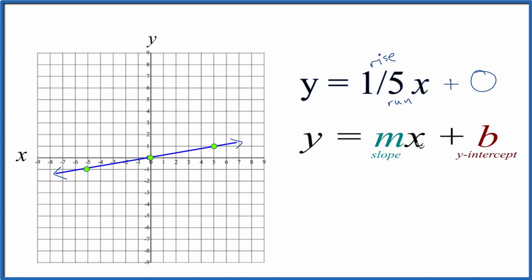And again, you could use a table of values. Here we use the slope-intercept formula. This is Dr. B graphing y equals one-fifth x. And thanks for watching.